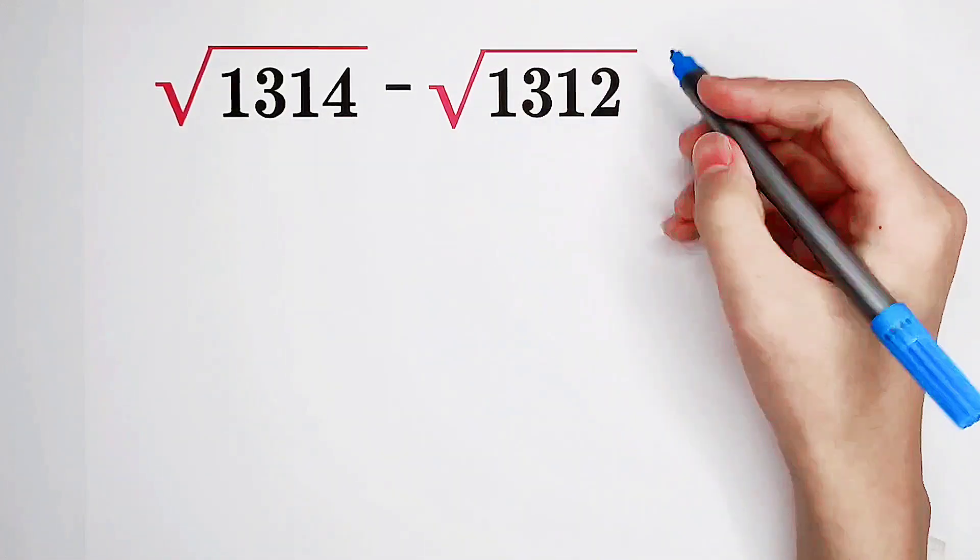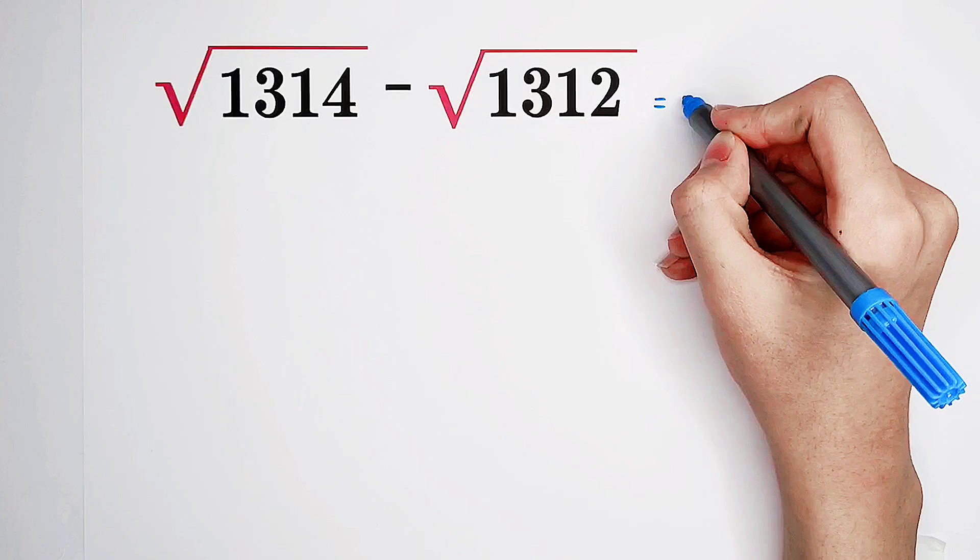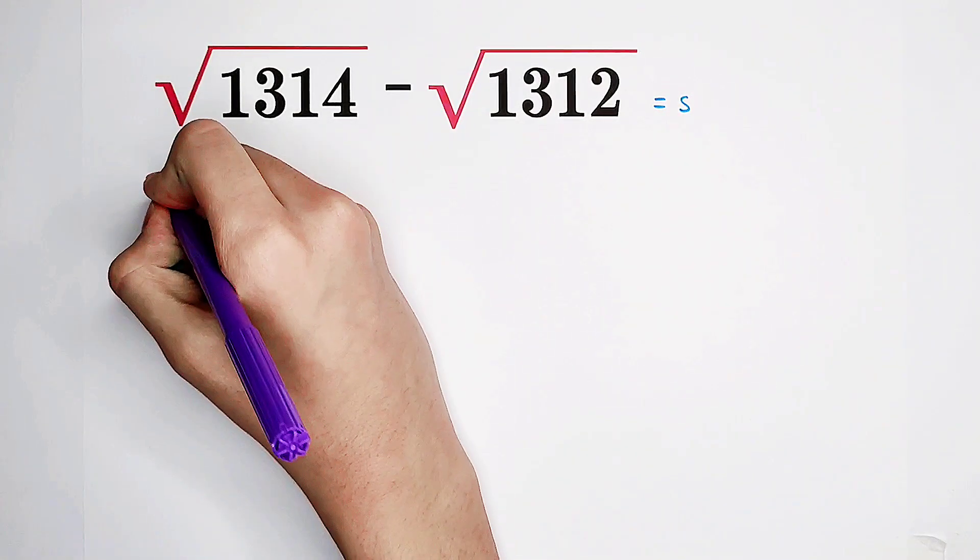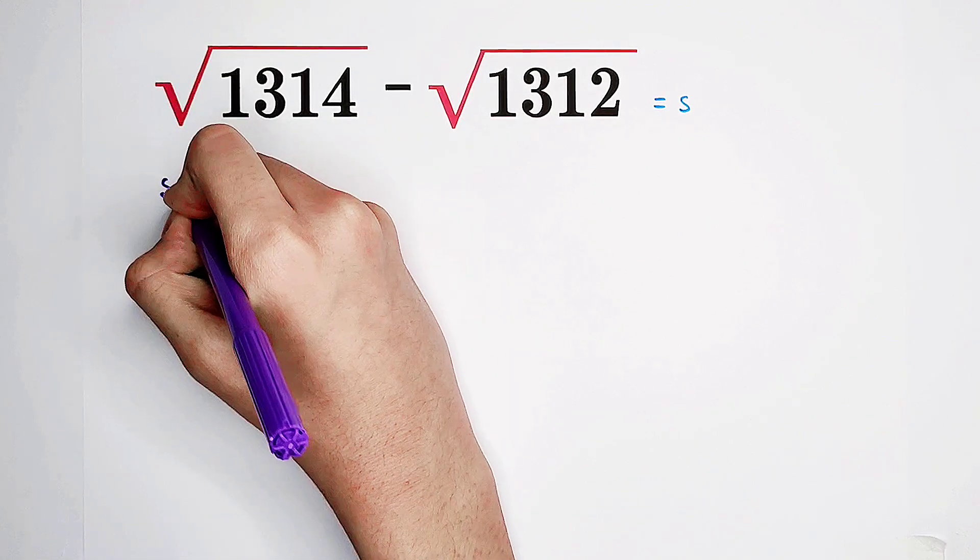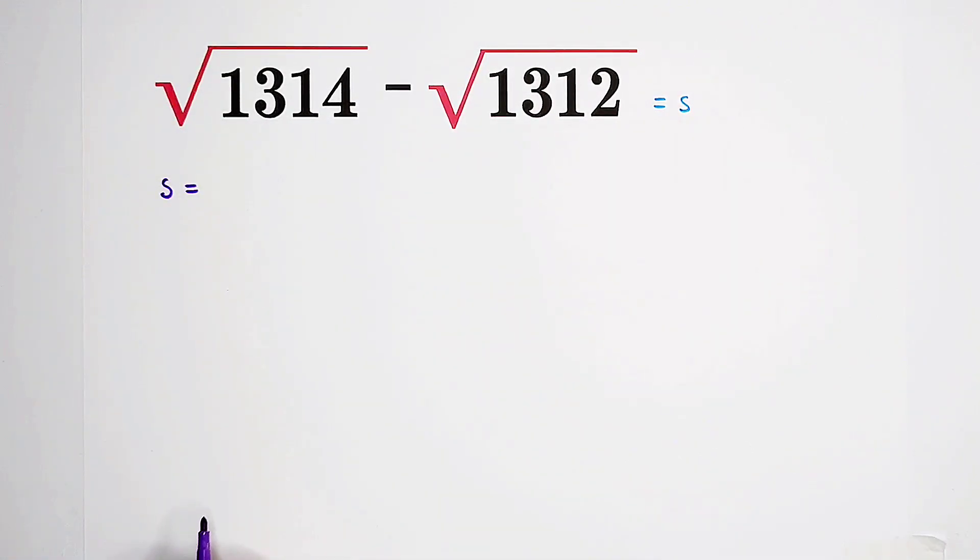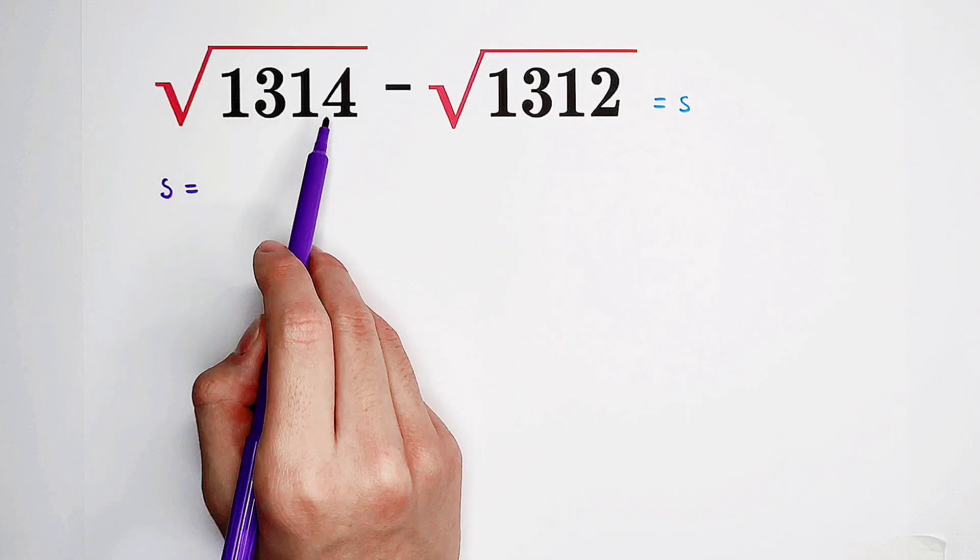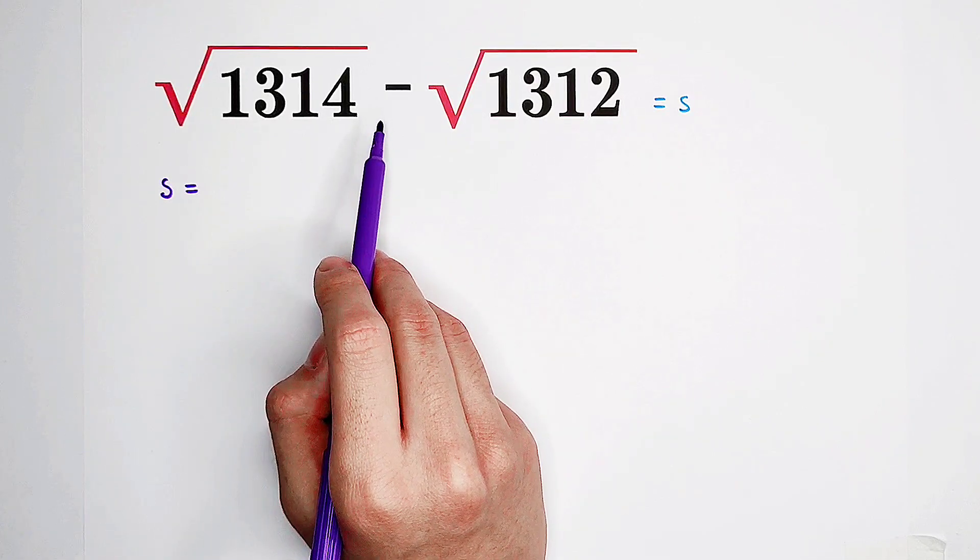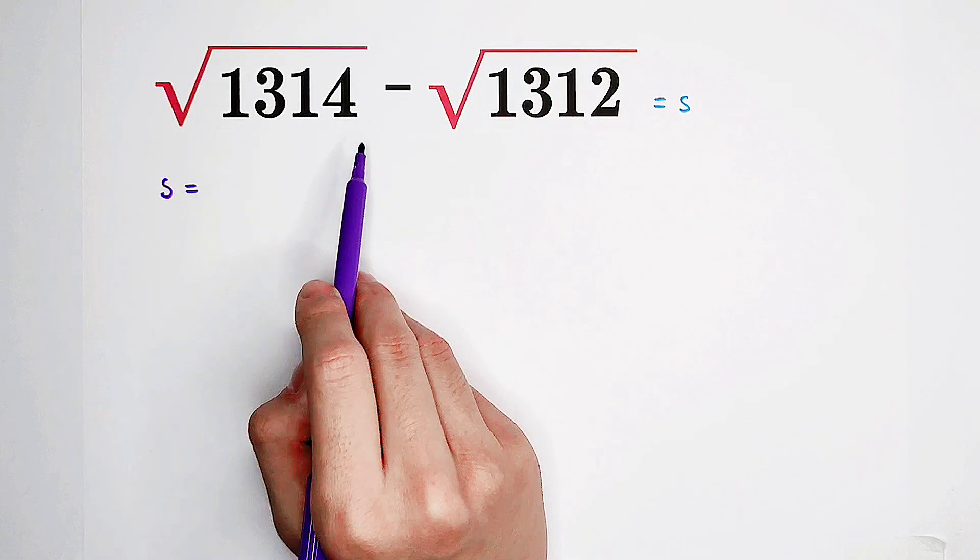We can let this guy be S. So now what can we do? Now, I'm going to try to write S in another way. 1,314, 1,312, and here is minus. So now, we should actually approximate S.